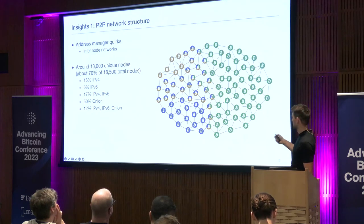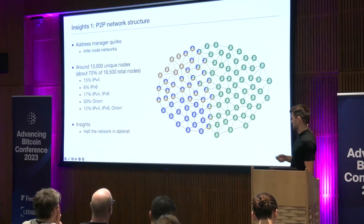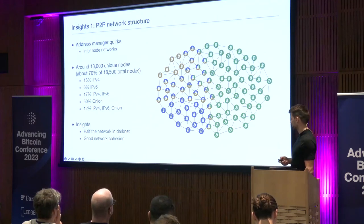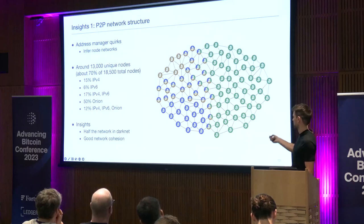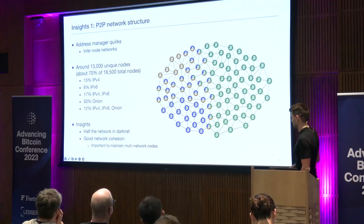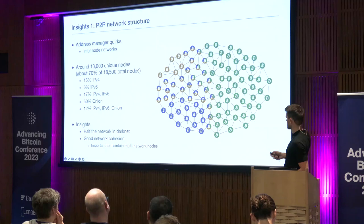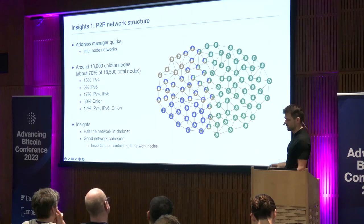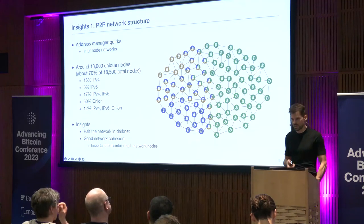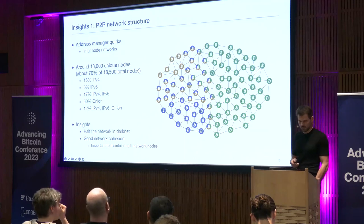Some insights: half of the network is actually anonymous. We have good network cohesion — about 12% of the network serving to connect these two halves is pretty good. Still, it's important to maintain nodes on multiple networks. A good way to contribute to network cohesion is to just add Tor to your existing IPv4 and IPv6 node.